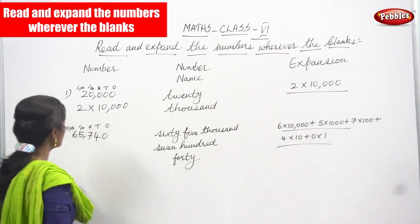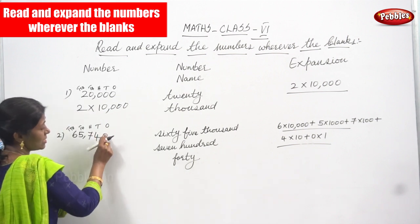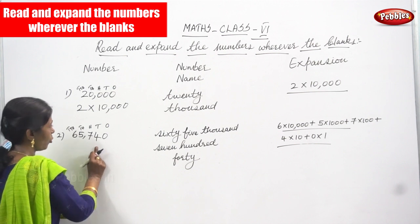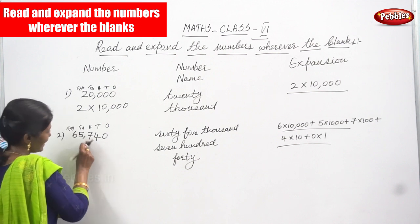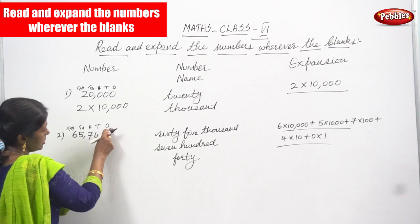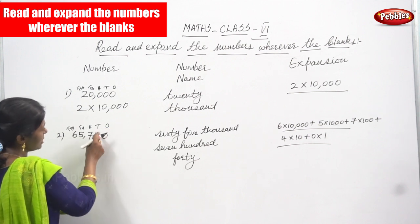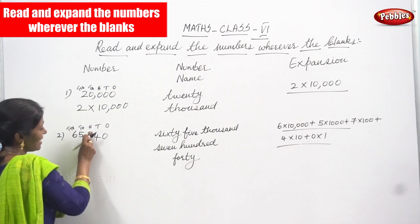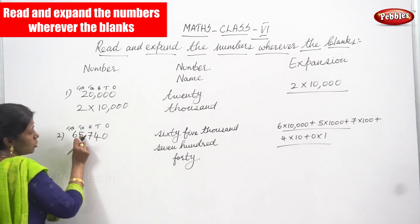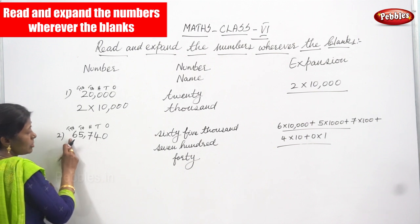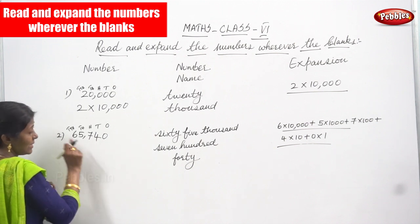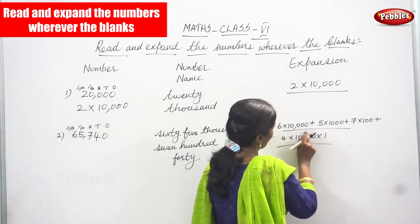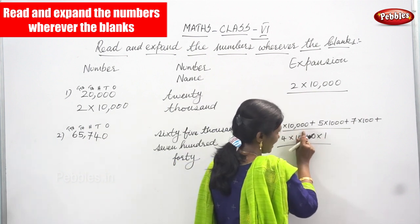I'll repeat once again. In the ones place, what is the number? 0. In the tens place? 4. In the hundreds place? 7 — that is 700. So ones place is 0, tens place is 4 — that is 40, hundreds place is 7 — that is 700, thousands place is 5 — that is 5,000, and ten-thousands place is 6 — that is 60,000.